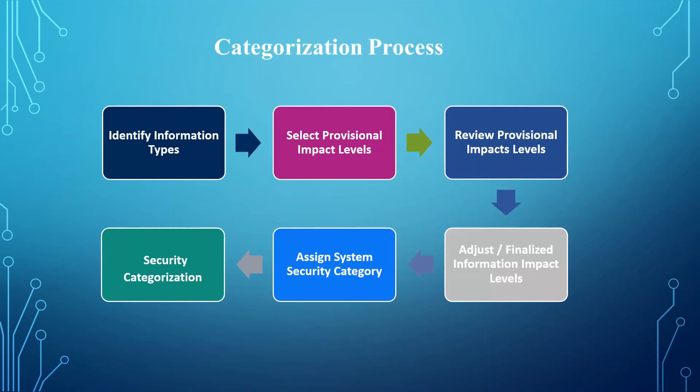The next step is to review the provisional impact levels and adjust or finalize the information impact levels. This is done by meeting with the system owner, the ISSM, or the CISO to review and adjust the information impact levels.